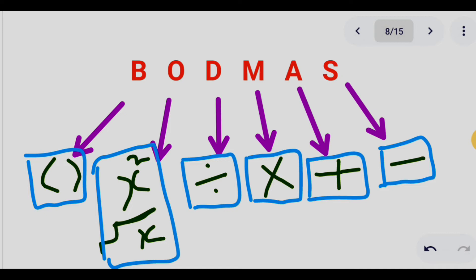Now here is the BODMAS rule. B is for Brackets, O is for Order, D is for Division, M is for Multiplication, A is for Addition, and S is for Subtraction. This describes the order in which we solve different operations in a mathematical statement. If all these operations appear in a single question, we first solve Brackets, then Order, then Division, then Multiplication, then Addition, and finally Subtraction. Let us practice by solving various questions.